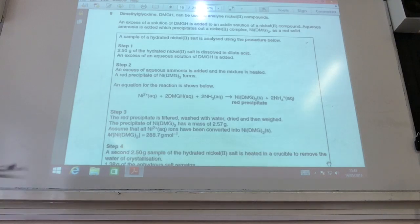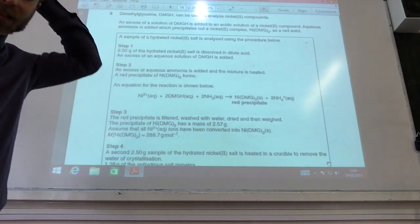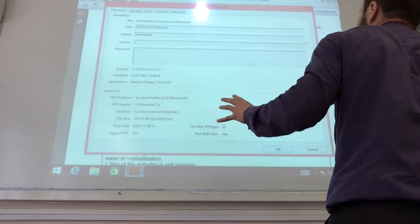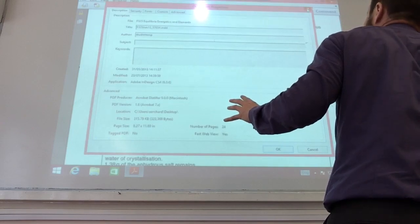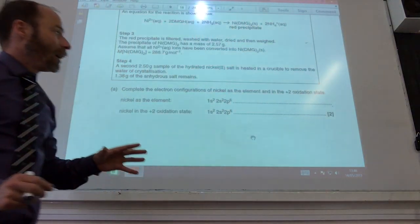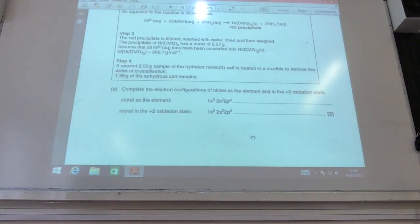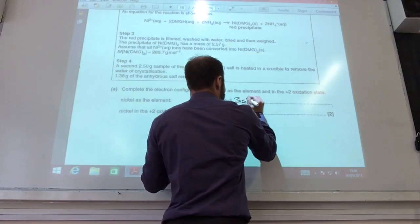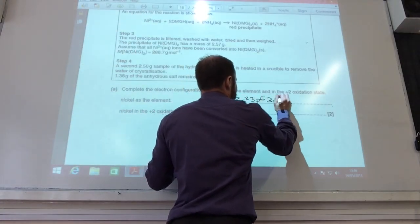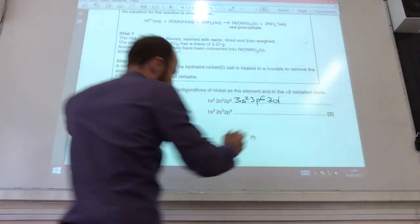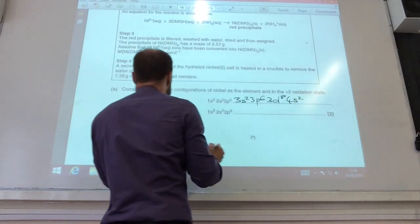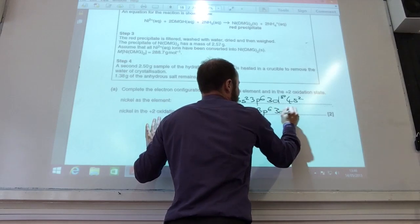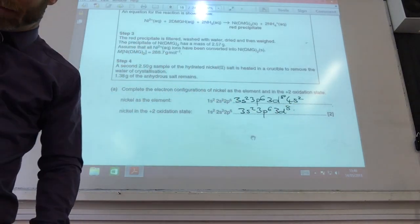Right, so question a, this is very naughty because it goes over too many pages. All the information you need is on this side and then you have to put the calculation on the other one. Anyway, lots of information here. We'll come back to that in a minute. Let's go. So first of all, nickel as the element and then nickel in its oxidation state of plus 2. Nickel's got 28 electrons. So 3s2, 3p6, and then to complete that I need 3d8 and 4s2. And nickel in the plus 2, I lose those two. So 3s2, 3p6, 3d8. Remember the 4s electrons go first.